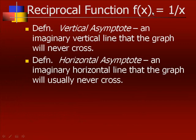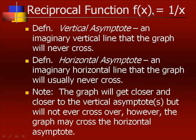A horizontal asymptote is an imaginary horizontal line that the graph usually never crosses, though occasionally it will. The graph will get closer and closer to the vertical asymptote but never cross it. However, the graph may cross the horizontal asymptote.